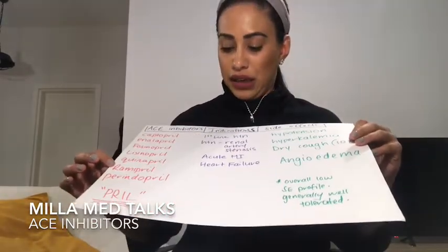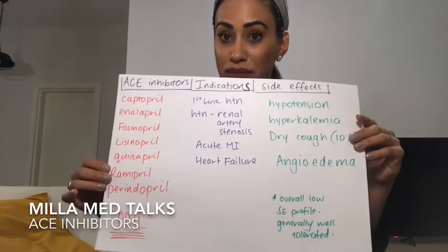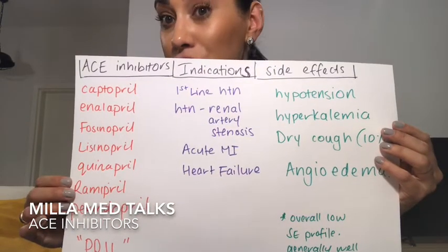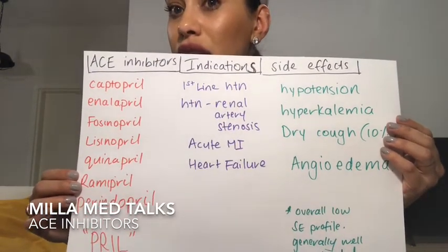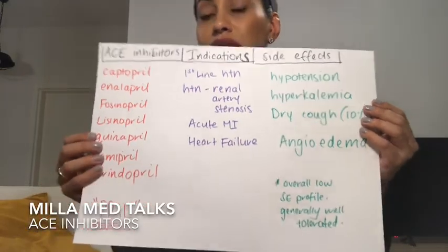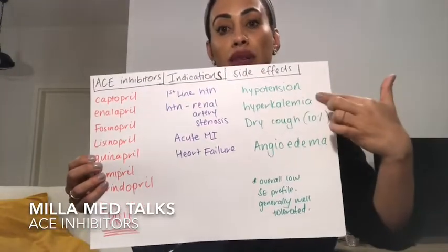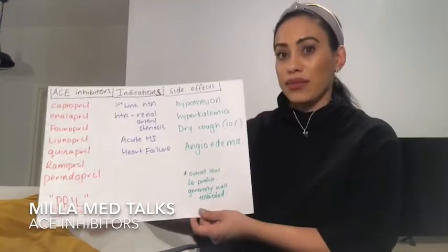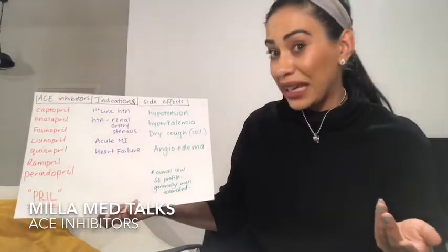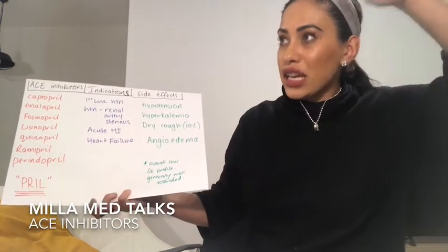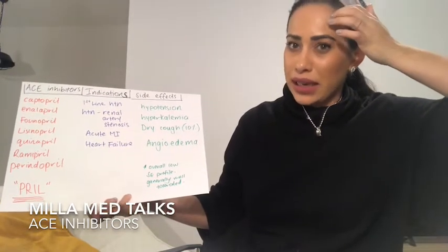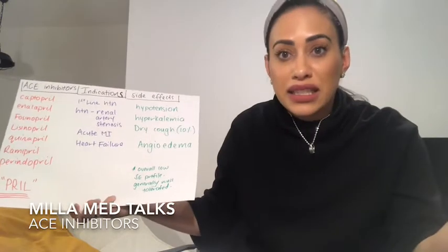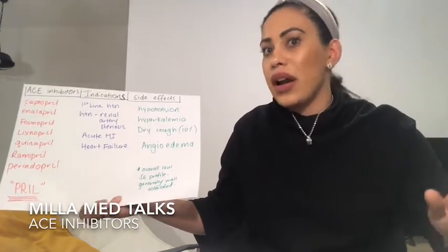Indications of ACE inhibitors: it's usually used first line for hypertension in almost every country and all resources. Also renal artery stenosis, acute myocardial infarction, and heart failure. Side effects of this medication can include hypotension — this can happen if the medication is working too well or if the dose is too high, requiring a dose adjustment. Hyperkalemia is an increase of potassium in the body. We need to be really careful with these patients and their diets, making sure they're not on a massive potassium-rich diet and that they have a stable, healthy diet.